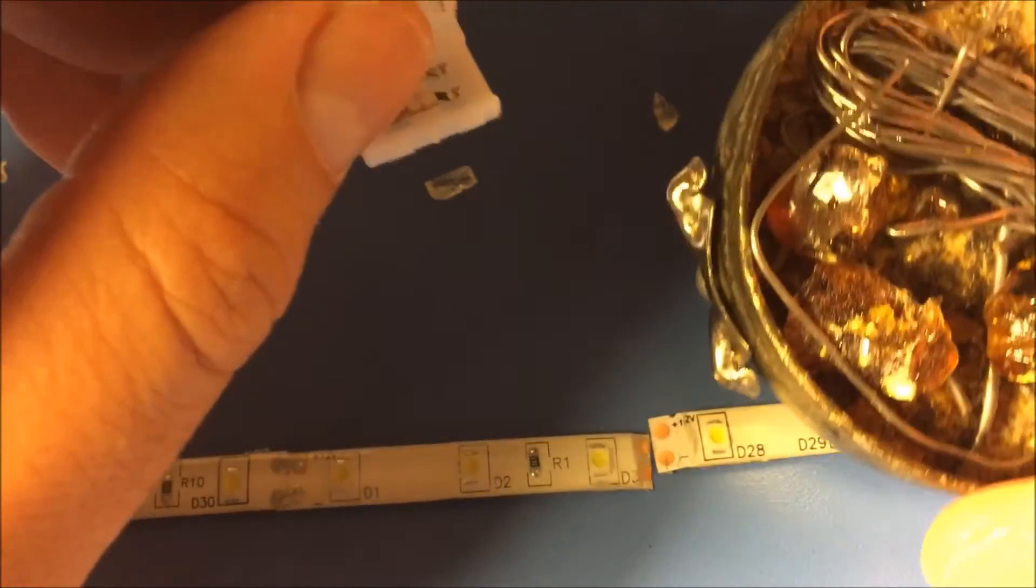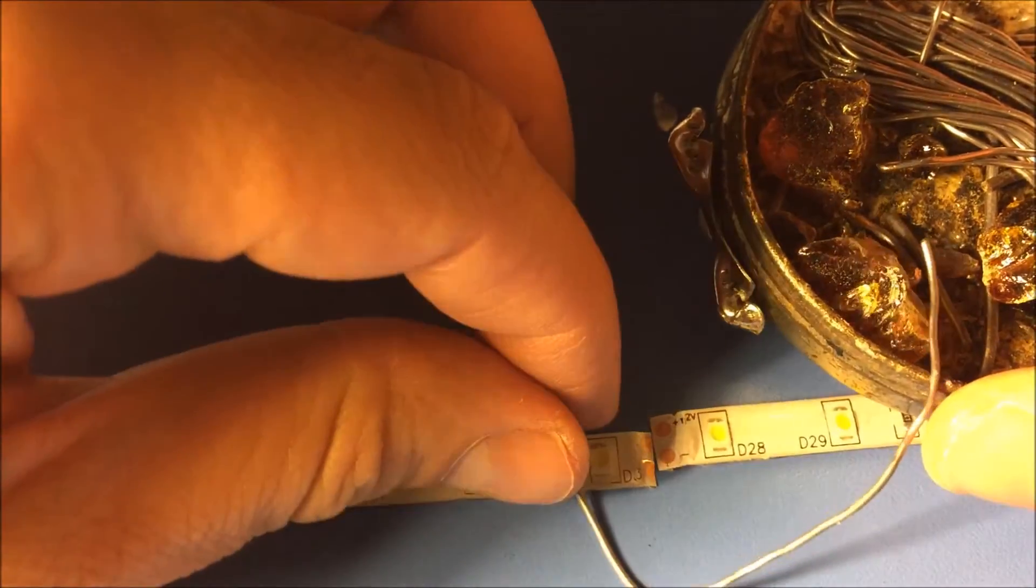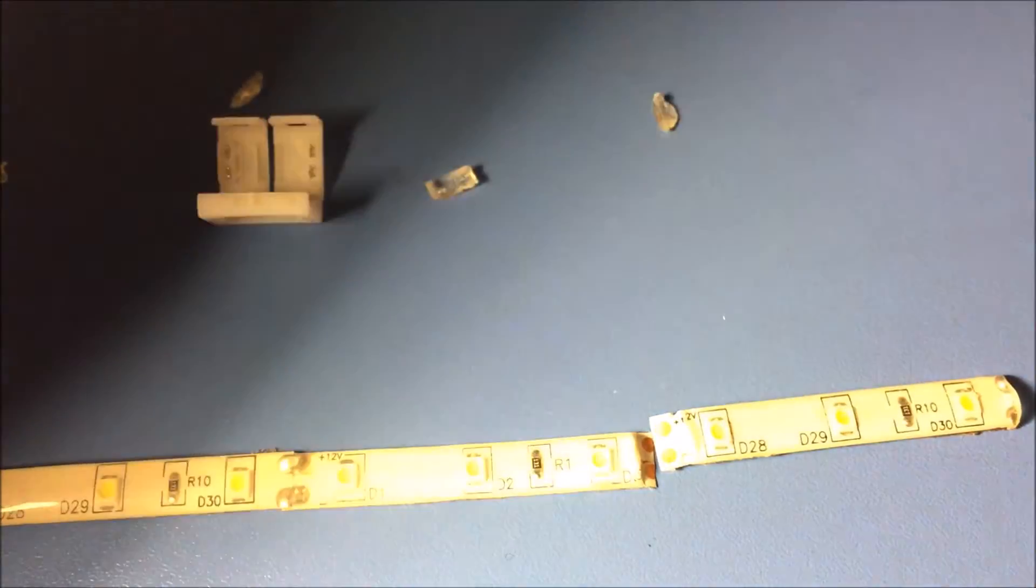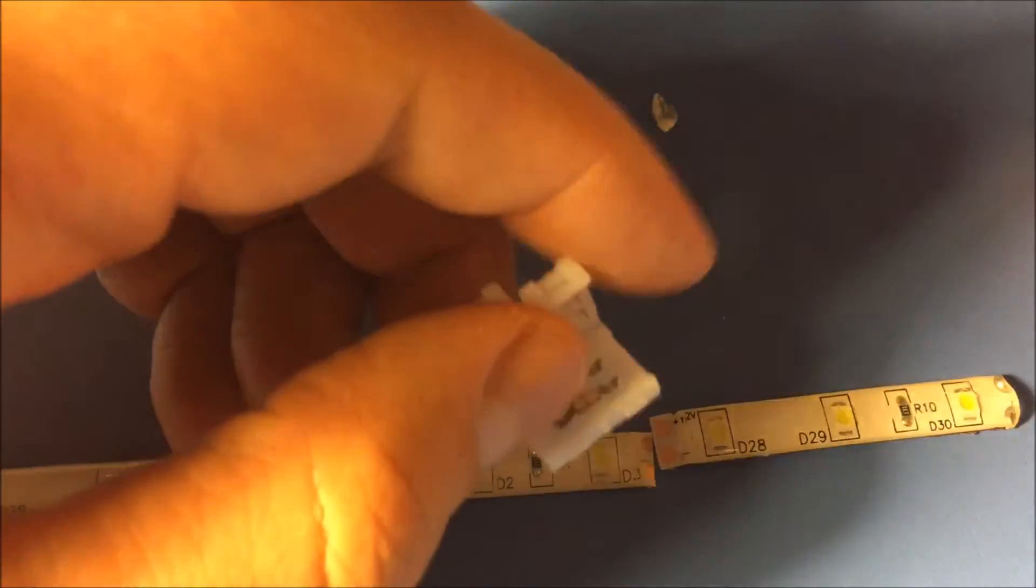I decided to take those kind of connectors off my LED strips and solder them using this kind of material. This is tin, I believe, for soldering. But now I am going to show you the easy way to do this.